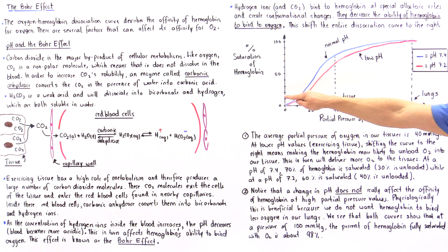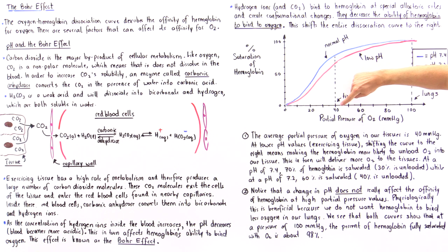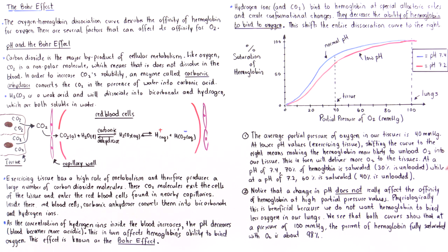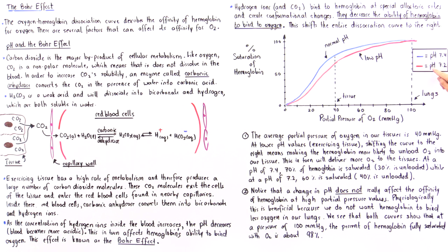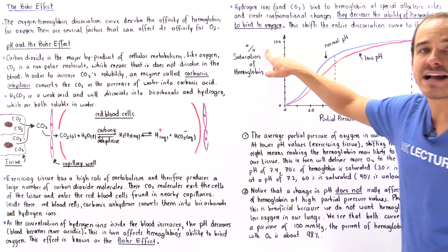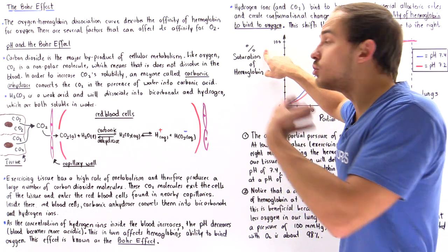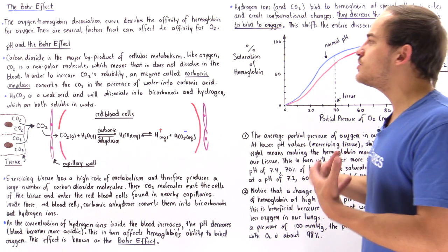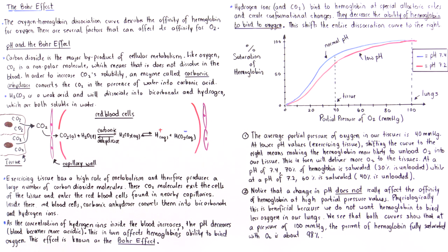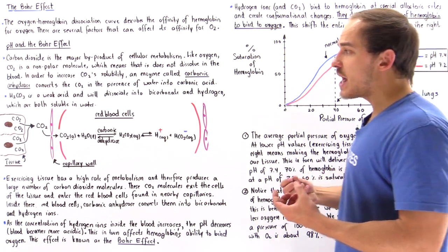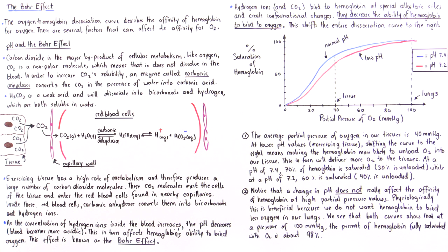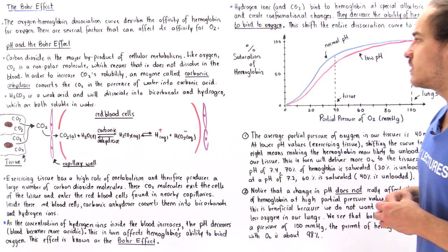At pH 7.4 on the blue curve, at 40 mmHg partial pressure we have 70% saturation of hemoglobin. But at the same partial pressure in exercising tissue at pH 7.2, we have lower percent saturation, meaning more hemoglobin has unloaded its oxygen — about 40% of hemoglobin exists in its dissociated form because oxygen has been unloaded. This is important to ensure cells with a higher rate of metabolism receive the oxygen needed to produce ATP and function correctly.